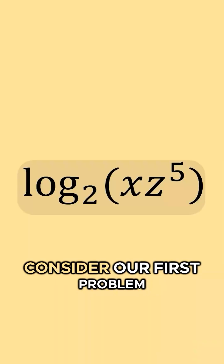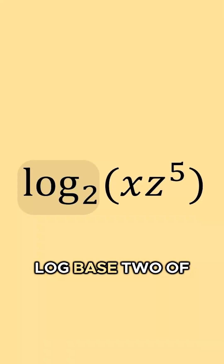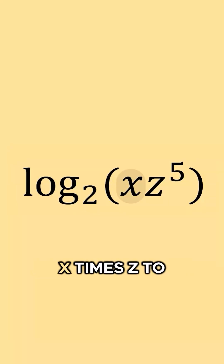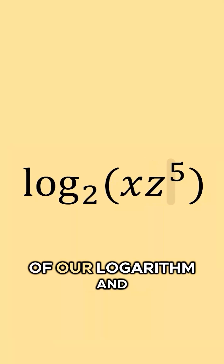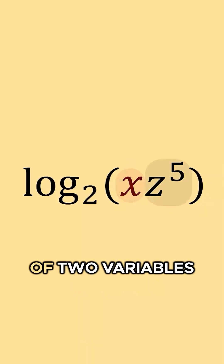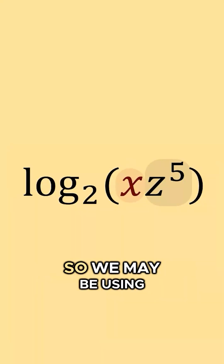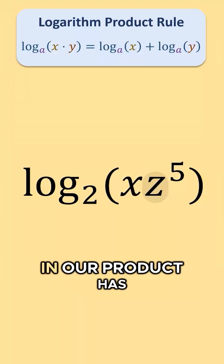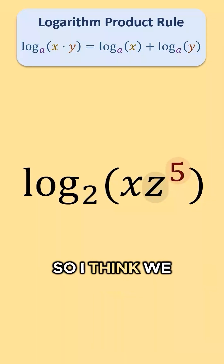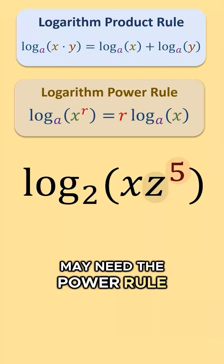Now that we've warmed up using one rule at a time, we are going to work through some problems that expand a single logarithm using two of the rules at a time. Consider our first problem: log base 2 of x times z to the fifth power. Scanning the inside of our logarithm, I see the product of two variables, so we may be using the product rule. One of the expressions in our product has the power of five, so I think we may need the power rule as well.